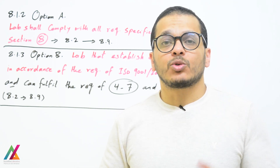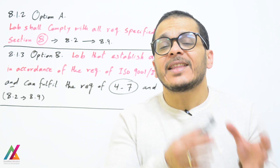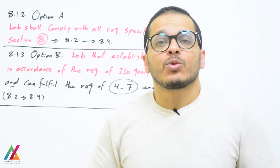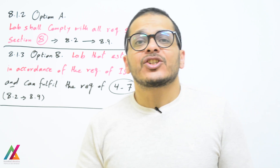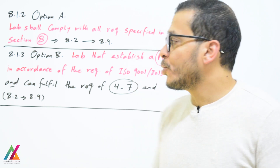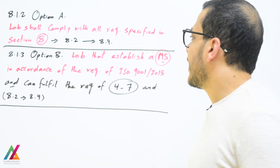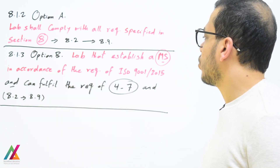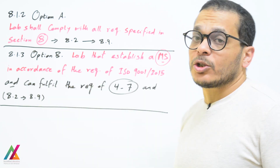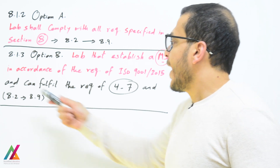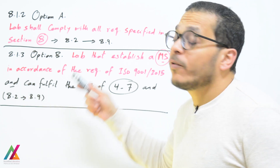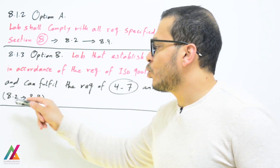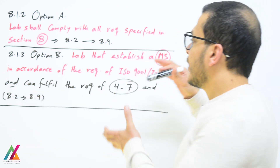If the lab is already accredited according to ISO 9001:2015 and needs to become accredited according to ISO 17025:2017, they shall follow Option B. Under Option B, a lab that has established a management system in accordance with ISO 9001:2015 and can fulfill the requirements of clauses 4 to 7 and 8.1 through 8.9 will follow this option.